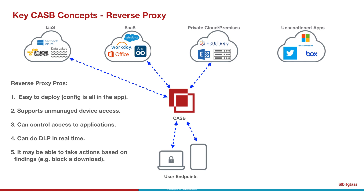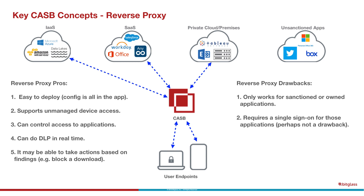Reverse proxy advantages: it's easy to deploy because the configuration is all in the cloud application, not on the endpoint. It supports unmanaged devices because the configuration is in the cloud — the cloud will redirect the user session whether it comes from a managed or unmanaged device. You get rich access control and logging, real-time data loss protection, and you can take actions like blocking downloads, modifying files, or removing sensitive information from a download. A couple of drawbacks: it only works for sanctioned applications, and it does require single sign-on to get the CASB seamlessly into the path.